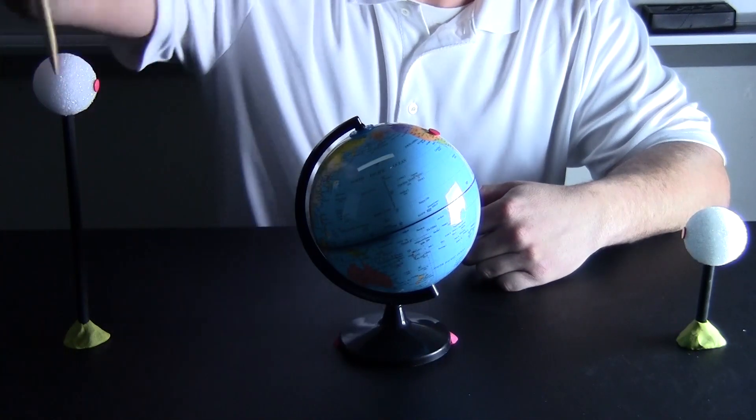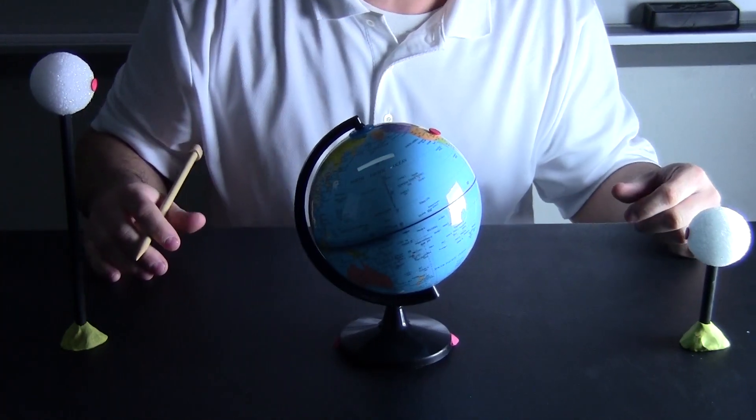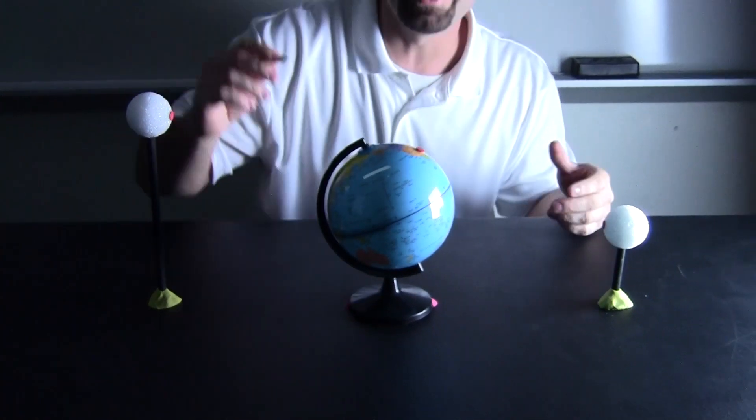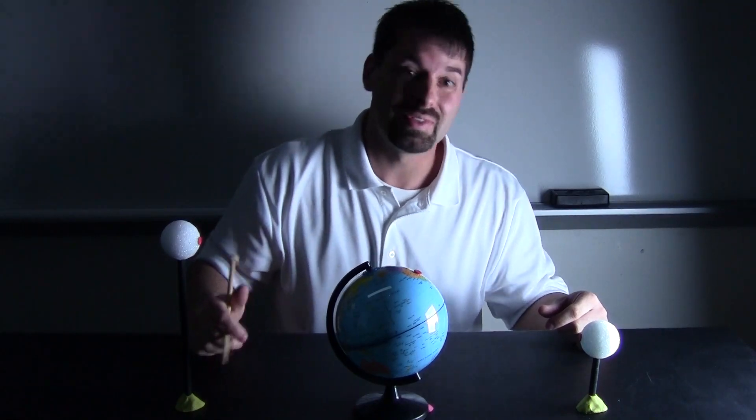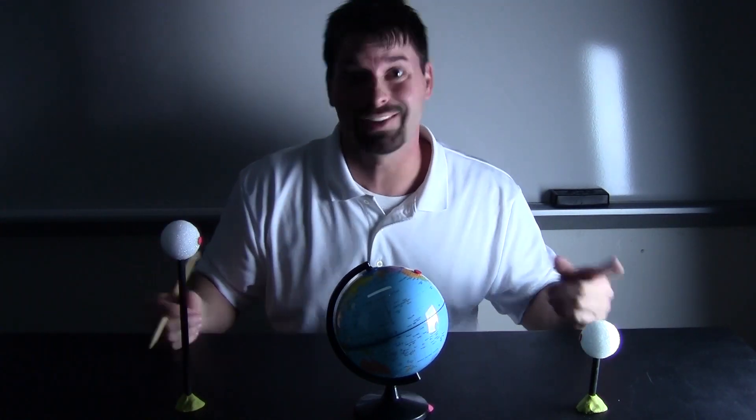The moon continues its trip around the earth and we are back to where we started. All together it takes the moon about four weeks or one month to make its way around the earth. And in an entire year, the moon goes around the earth twelve times, twelve months in a year. It is pretty cool.